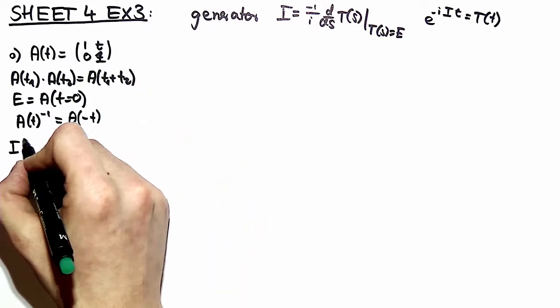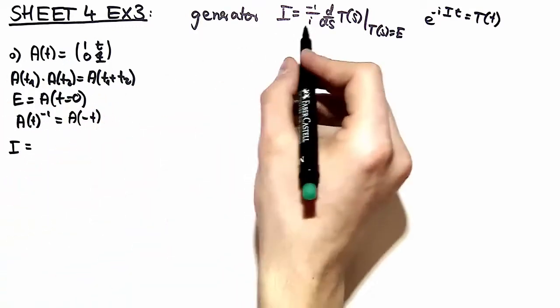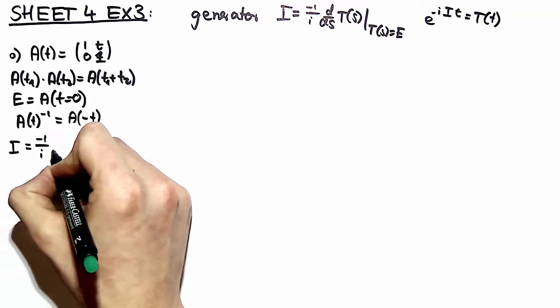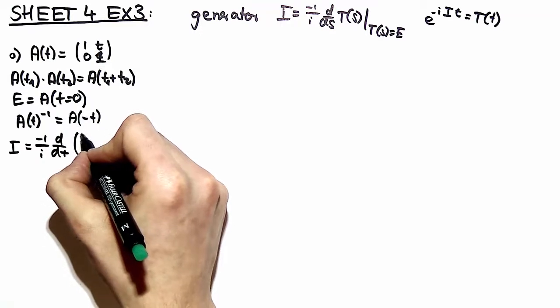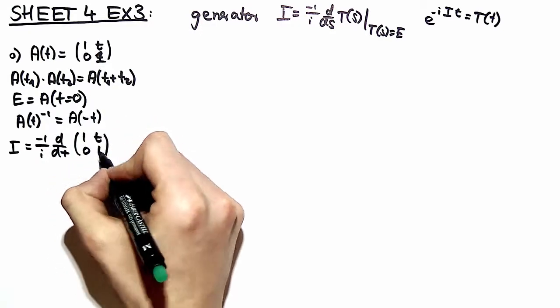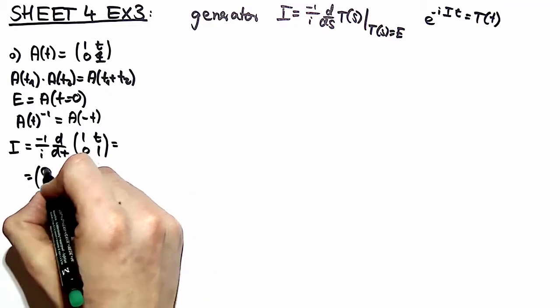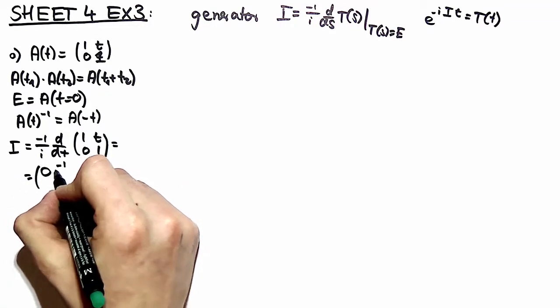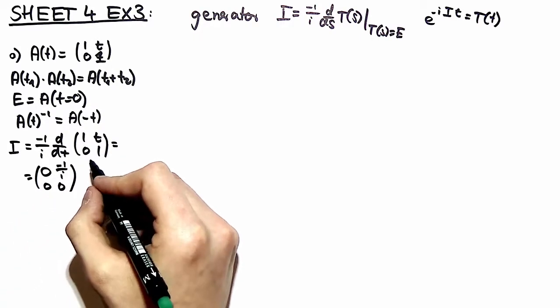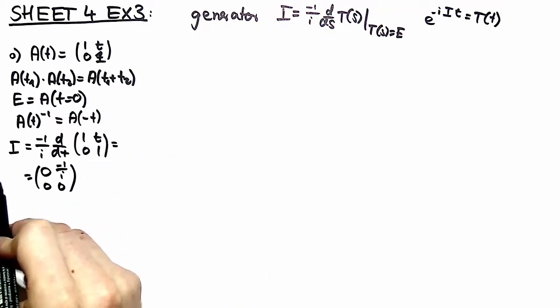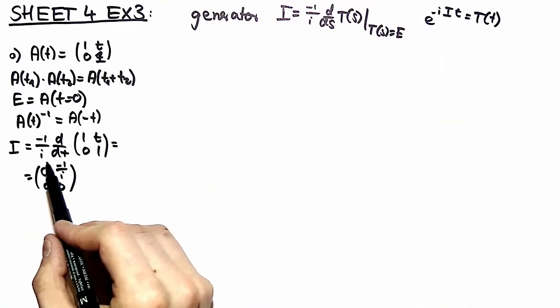Now we want to see what is the generator of this group. We just copy from the definition: this is minus 1 over i d/dt of this matrix representation (1,t; 0,1). Then you see this is nothing else than a matrix with minus 1 over i in the upper right corner. When validating that this is indeed the generator of the group, we have to take the exponential of this generator.